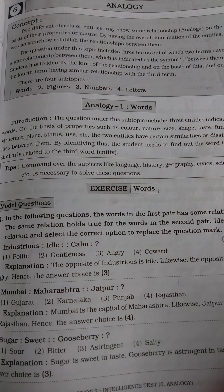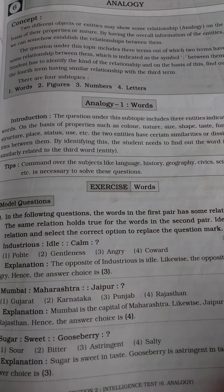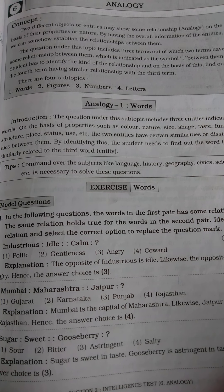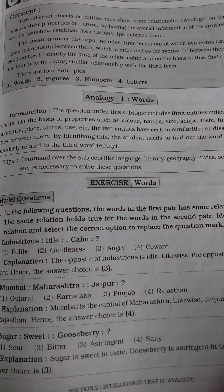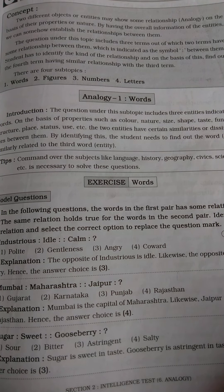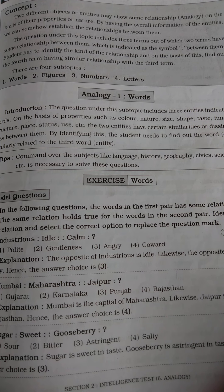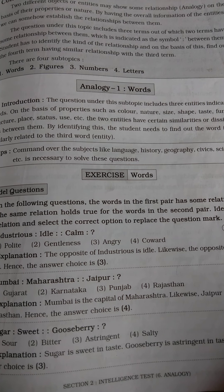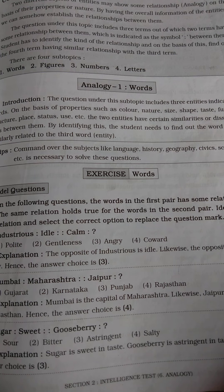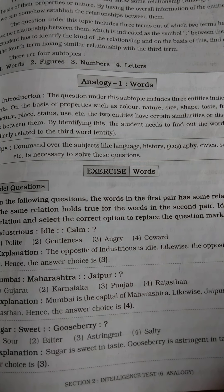By having the overall information of the entities, we can somehow establish the relationships between them. The question under this topic includes three terms, out of which two terms have some relationship between them. We have to identify the relationship, which is indicated by the symbol colon between them. The student has to identify the kind of relationship and find out the fourth term having a similar relationship with the third term. There are four subtopics: first, words; second, figures; third, numbers; and fourth, letters.